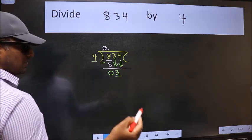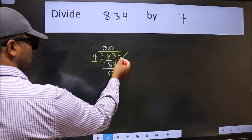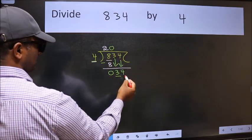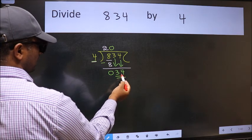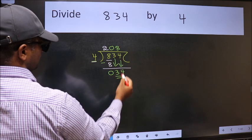And the rule to bring down the second number is we should put 0 here. Then only we can bring this number down. Now 34. A number close to 34 in the 4 table is 4 times 8 equals 32.